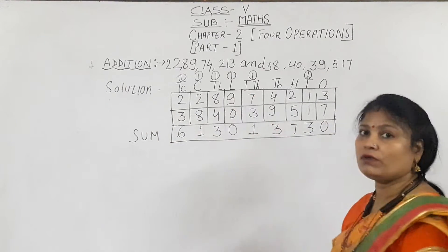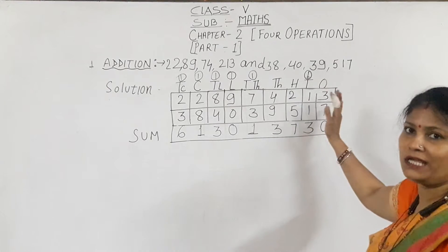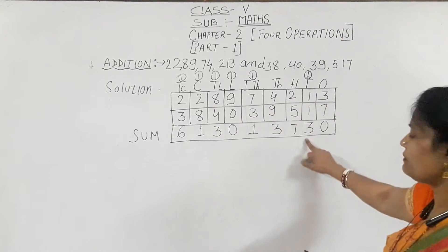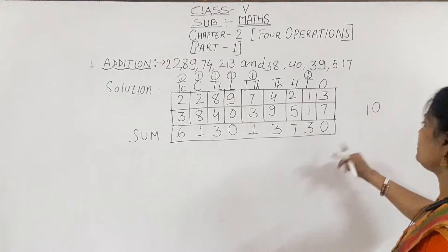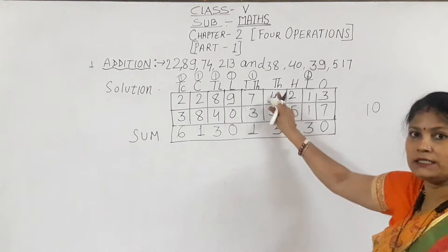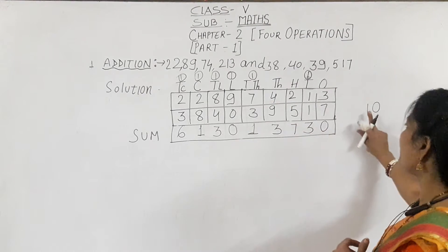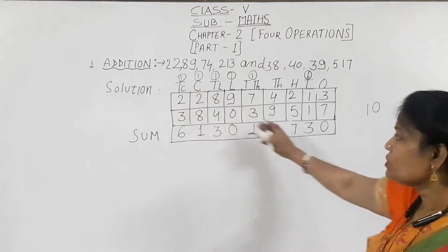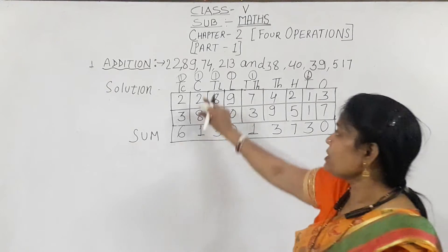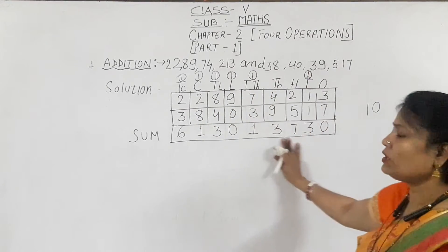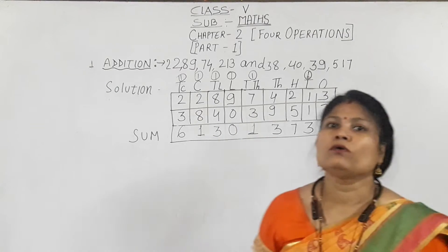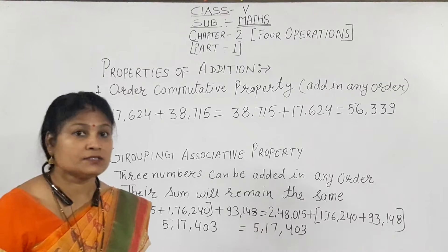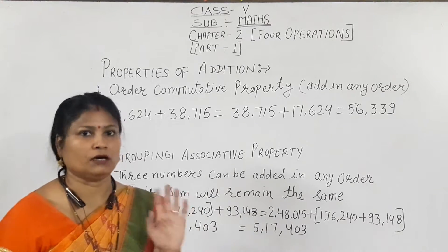With carry, we add the same way as without carry. But whenever a carry comes — meaning a 2-digit result — we write the units digit under the place value and take the tens digit as carry to the next left place. These two numbers are called addends and the result is called the sum. In this manner we can do addition with carry.